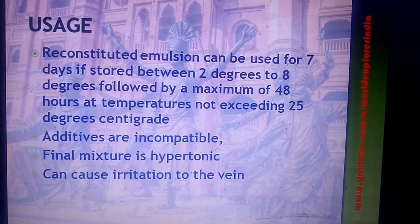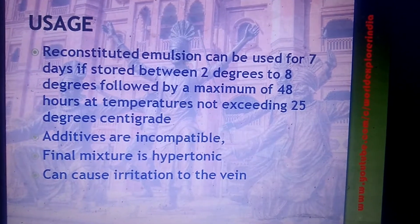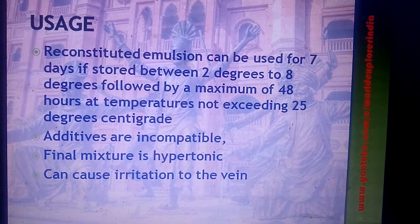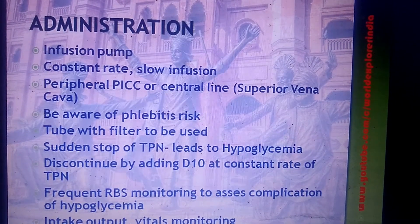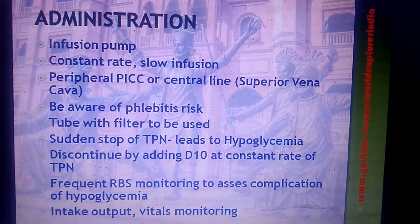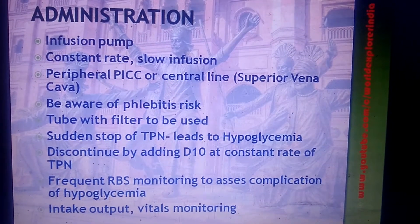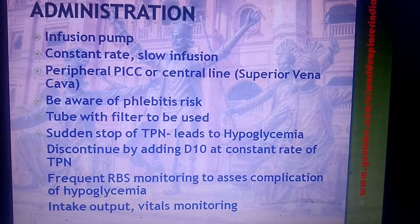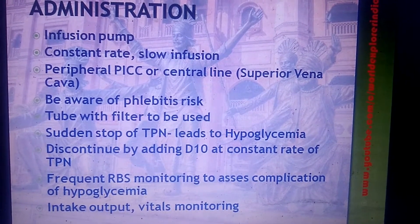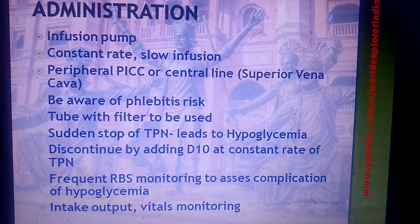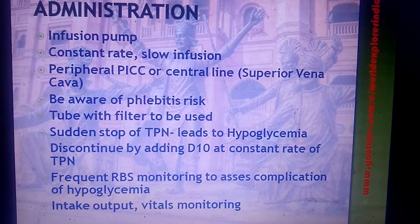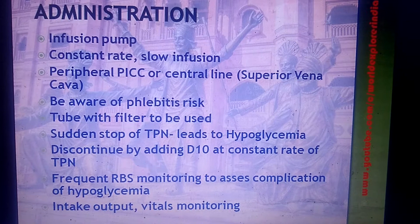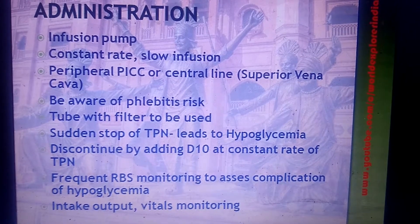You should not add any other additives to the final TPN mixture. Since the final mixture is hypertonic, it can cause irritation to the veins. Administration is usually via an infusion pump at a constant rate and slow infusion, given over 18 hours or up to 24 hours. It is usually given by a central line or peripherally inserted central catheter.